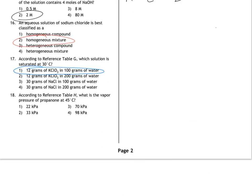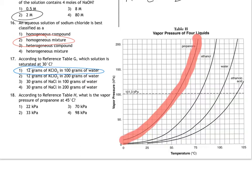Last question on this page. According to reference table H, what's the vapor pressure of propanone at 45? So I highlighted the propanone line. And when we go up to 45 degrees Celsius, it's right there. And the vapor pressure would be 70 kilopascals.